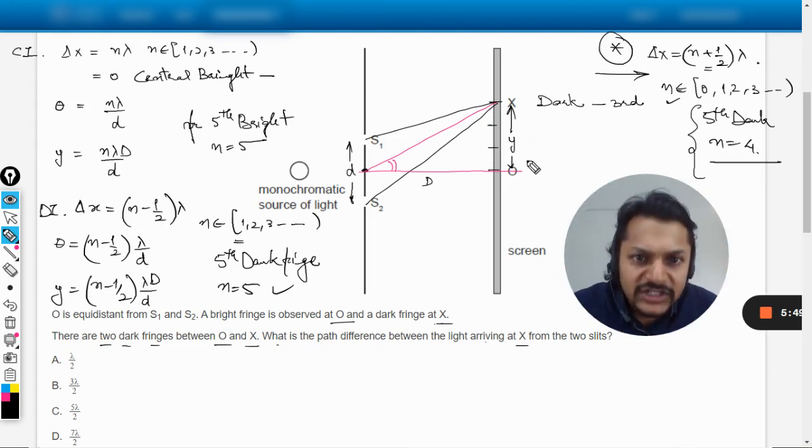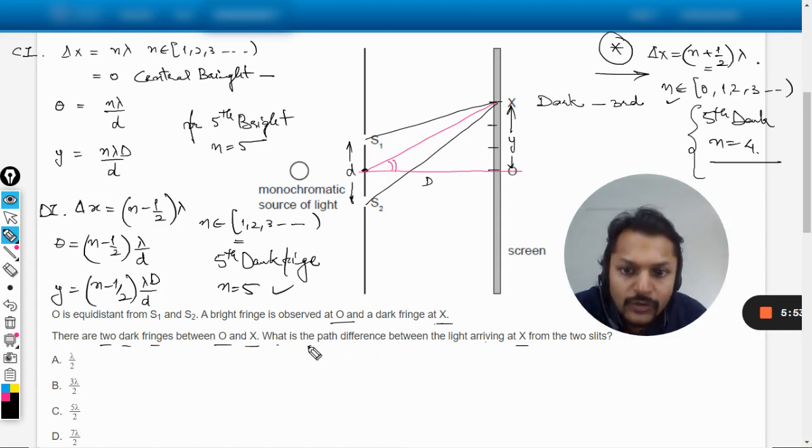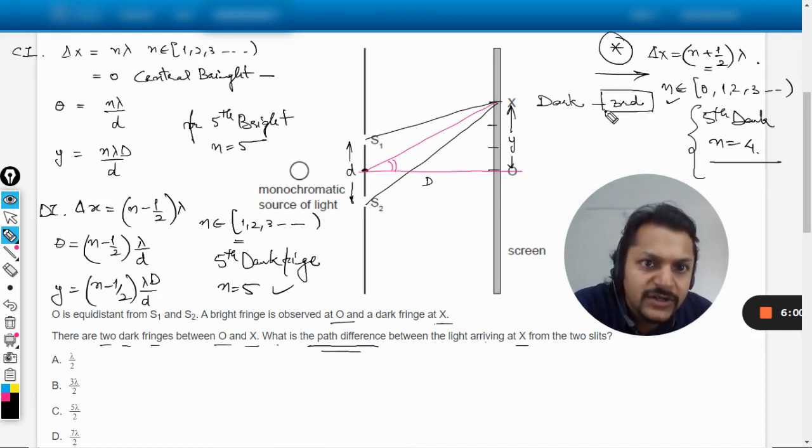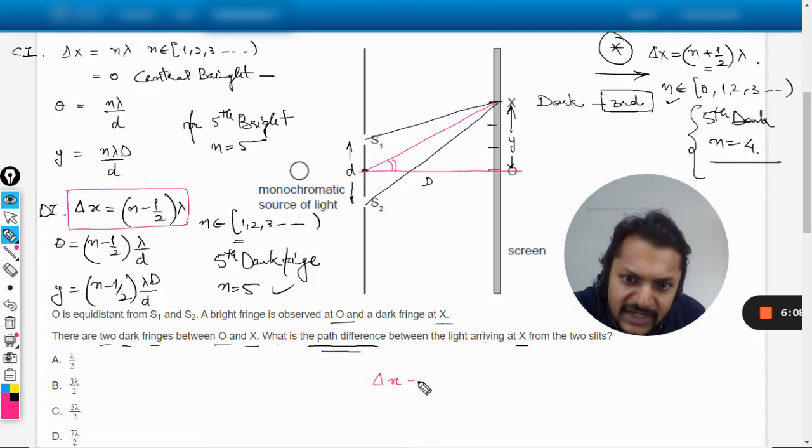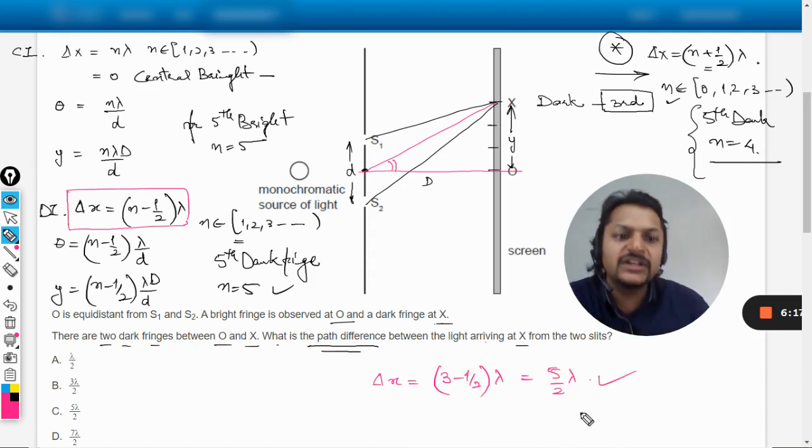Now having said that, let us move to our question. This is the third dark fringe. As per the path difference is concerned, we are having this formula directly, and you just substitute the values here. So delta x equals (3 minus half) into lambda, and it is coming out to be 5 by 2 lambda, and you see thereby you have received the answer.